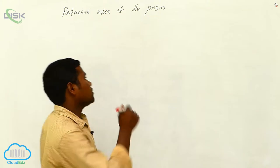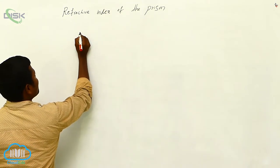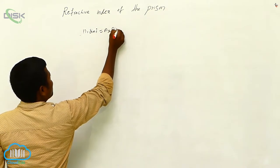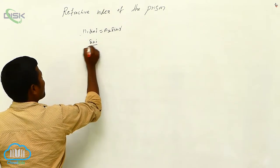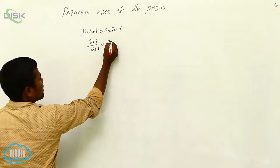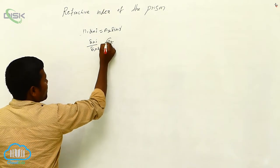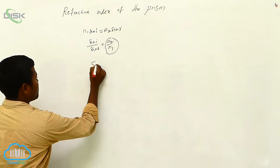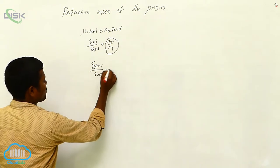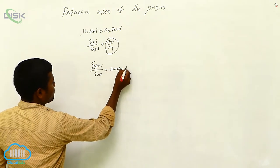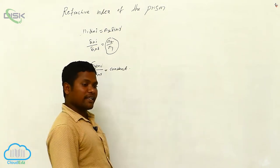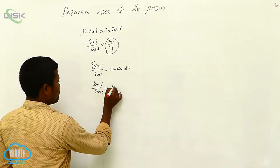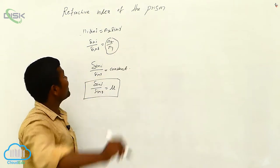Generally you might have written it like this: n1 sin i is equal to n2 sin r. Then what happens? sin i by sin r is equal to n2 by n1. Now n2 by n1 is one constant, so sin i by sin r is equal to a constant. In general, that constant we are considering with the symbol mu. So sin i by sin r is equal to mu.